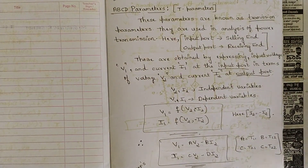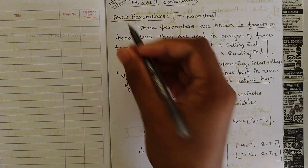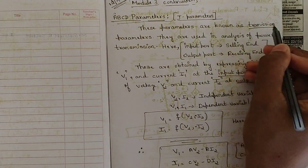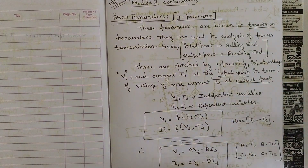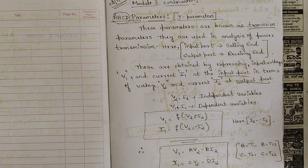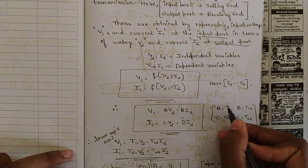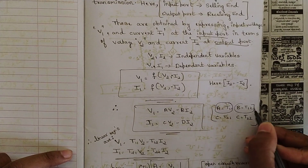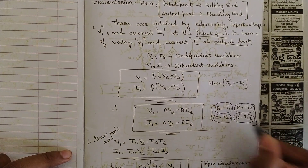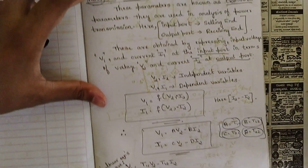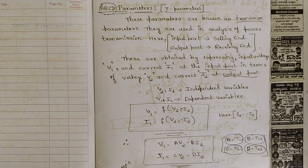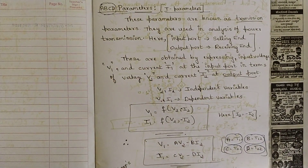Without wasting much time, let us discuss the last kind of parameter: the ABCD parameter, also called the T parameter or transmission parameter. T stands for transmission parameter. This name comes from the fact that we can write A = T11, B = T12, C = T21, and D = T22 — that's why it is called the ABCD parameter.